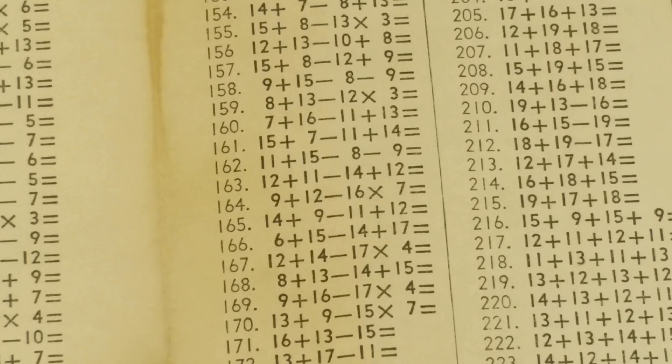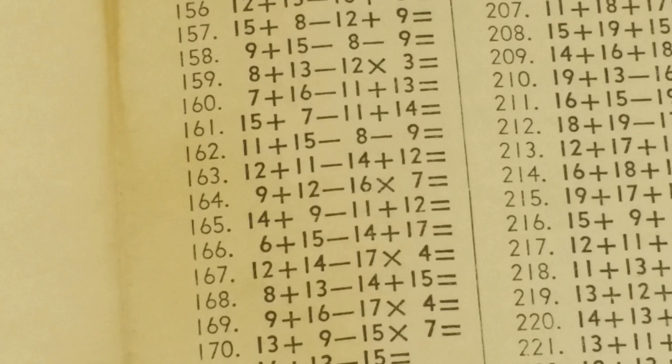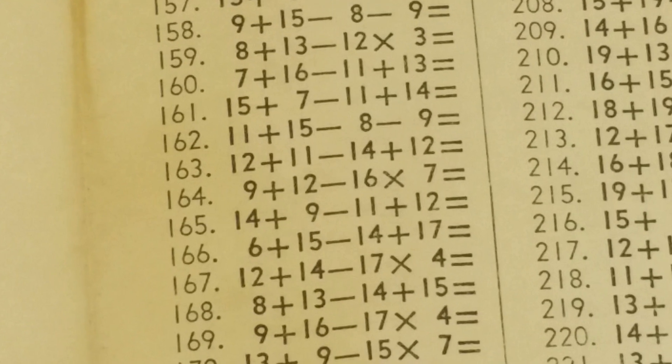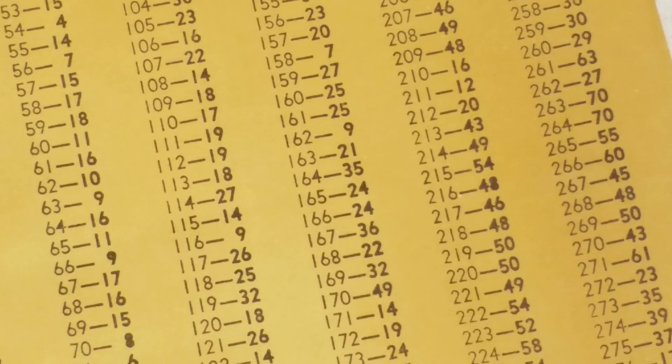I thought they said 'can't get out of order.' They just want you to do everything left to right. So when you see 9 plus 12 minus 16 times 7, they do 9 plus 12 first, which is 21. Then subtract 16, which is 5. And then multiply by 7, which is 35.